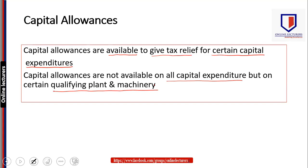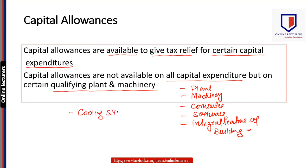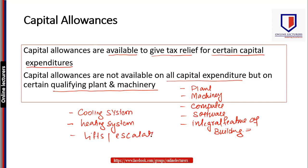When we talk about qualifying plant and machinery, you can get capital allowances on any kind of plant, any kind of machinery, computers, software, and integral features of buildings. You can also get the allowance for any plant and machinery which is part of the building or an integral feature of a building, such as the cooling system, heating system, lifts, escalators, and so on.